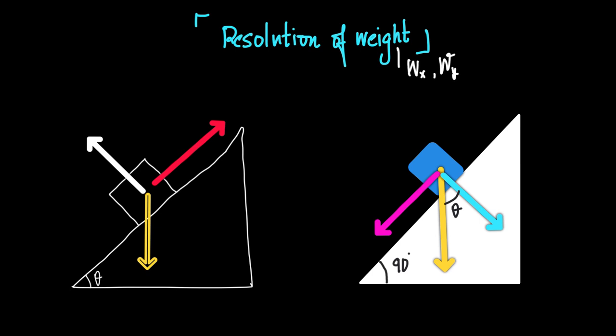Now, horizontal and vertical are with respect to the inclined plane. So I will resolve weight into two components: one component would be parallel to the inclined surface, and the other would be perpendicular to the inclined surface. So we have two components.